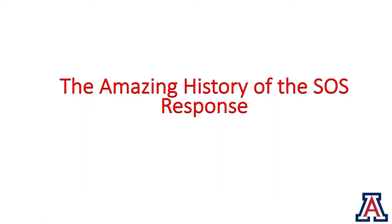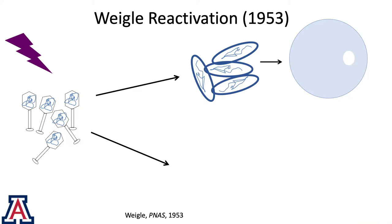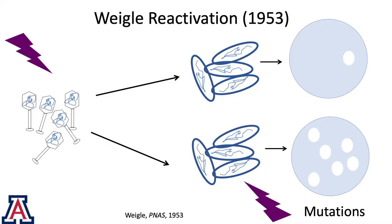The amazing history of SOS. Bible reactivation came into play here, and it was published in 1953 by Bible. Here are your UV-radiated phage, and if you plate those phage on an E. coli host, not many of them survive — we look at survival by plaques. If you plate UV-radiated phage on UV-radiated hosts, however, you get a lot of plaques, so a lot of phage survive, and it was subsequently shown that a lot of these phage have mutations. So there's something going on, some sort of a response in the cells that's rescuing these phage.